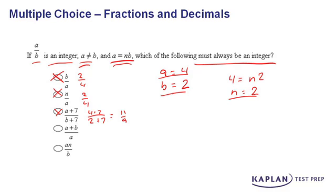So we look at answer choice D, a plus b over a. Well, all right, we get four plus two over four. That's six over four, not an integer.